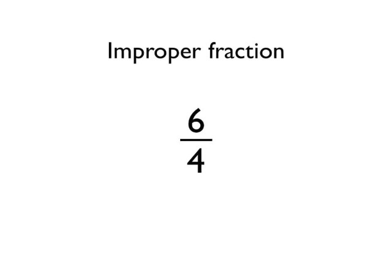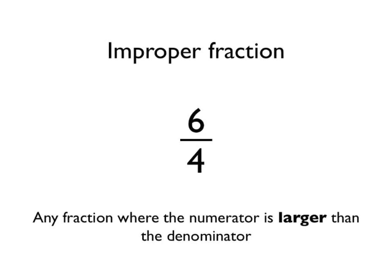Improper fractions look like this. So 6 quarters, 6 over 4, is an improper fraction. This is because the numerator is larger than the denominator.